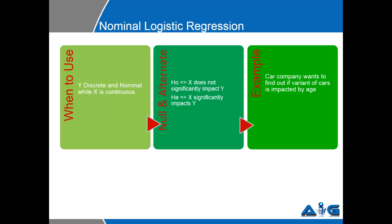NLR is used when y is discrete and nominal data, while x is continuous. The null hypothesis in this case will say that x does not significantly impact y, whereas the alternate hypothesis will say that x significantly impacts y.